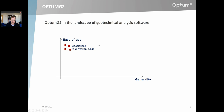Looking at very specialized applications — for example, the program Wallop, which is used quite extensively for retaining wall analysis, and SLIDE for slope stability analysis — these are very specialized programs. Because they are so specialized, they are also very easy to use, scoring high on ease of use but low on generality. At the other end of the spectrum, we have more general purpose programs: Abaqus, a completely general finite element program, and also Plaxis, which is a general purpose program geared for geotechnical applications. They are general, but not particularly easy to use.